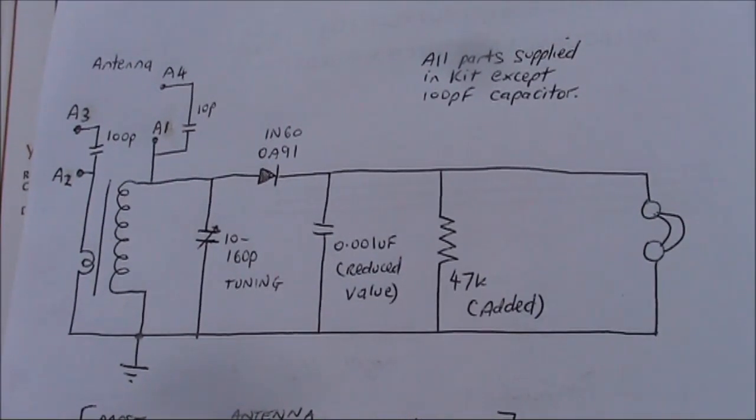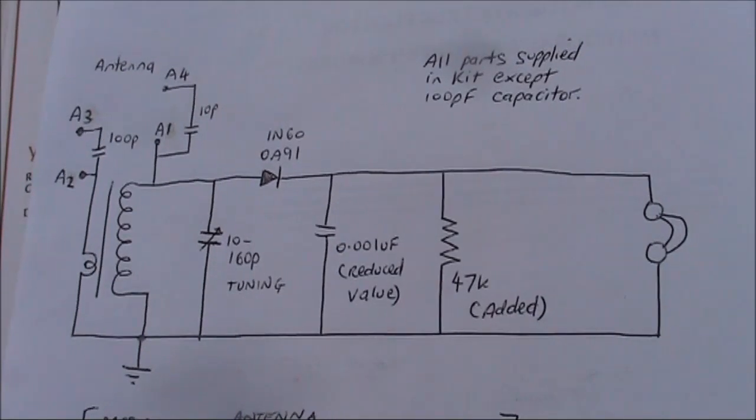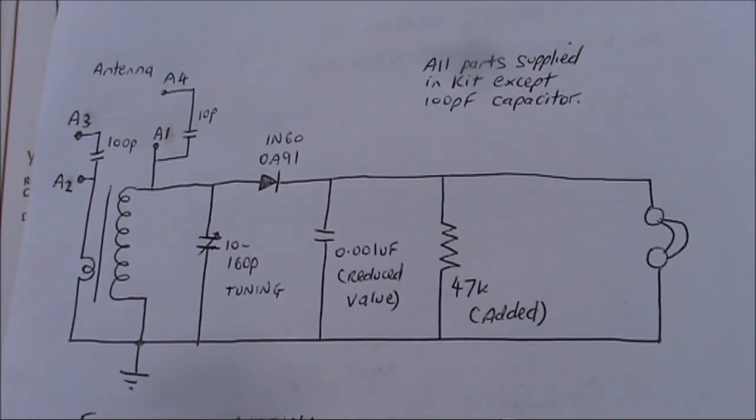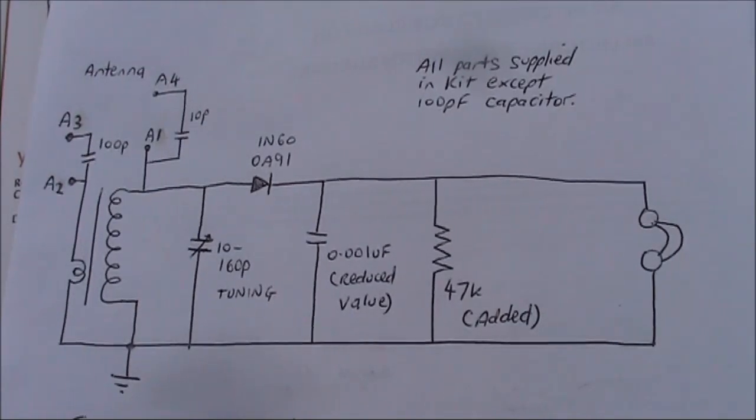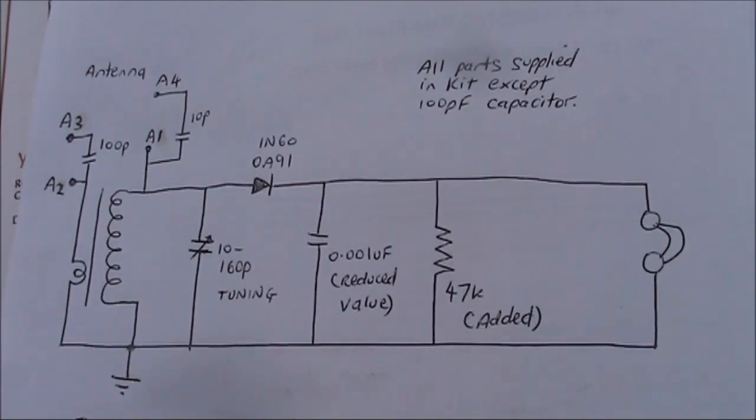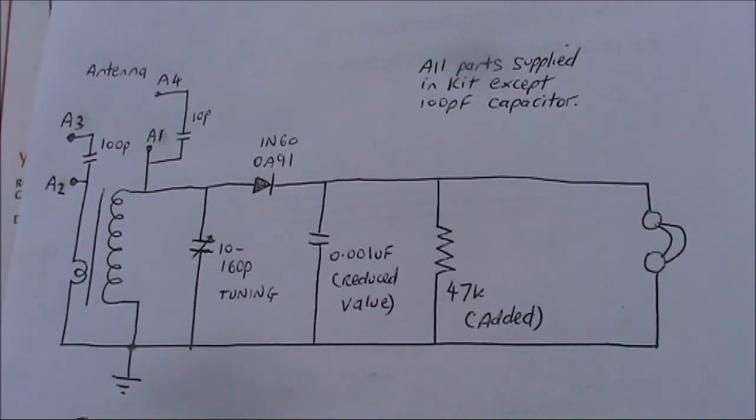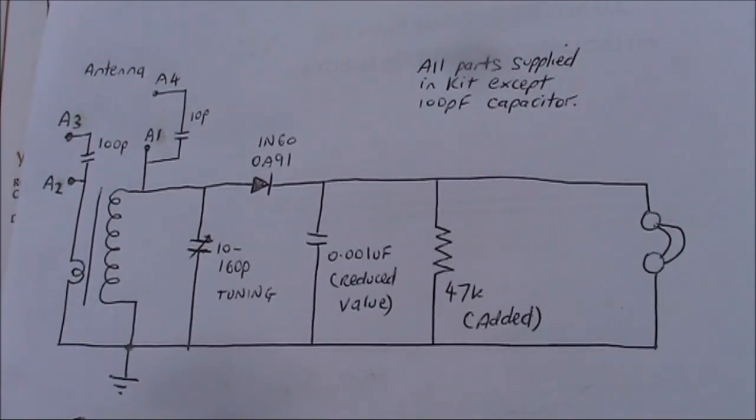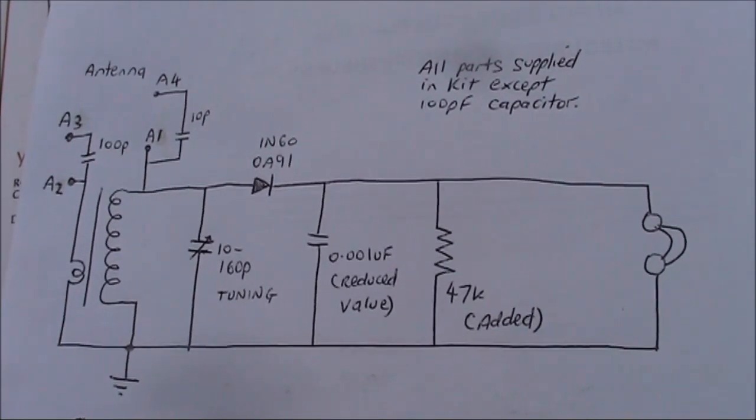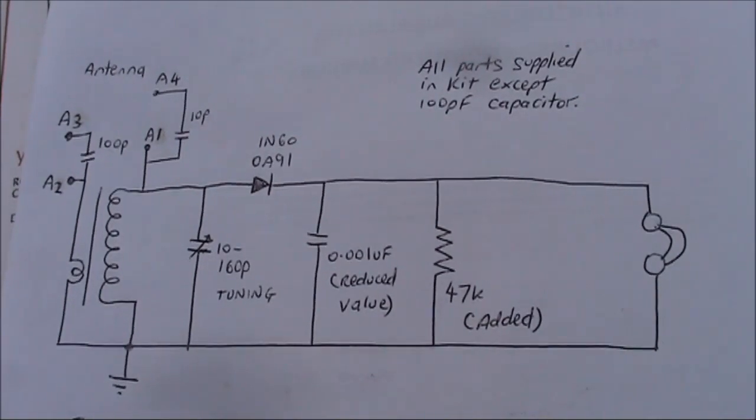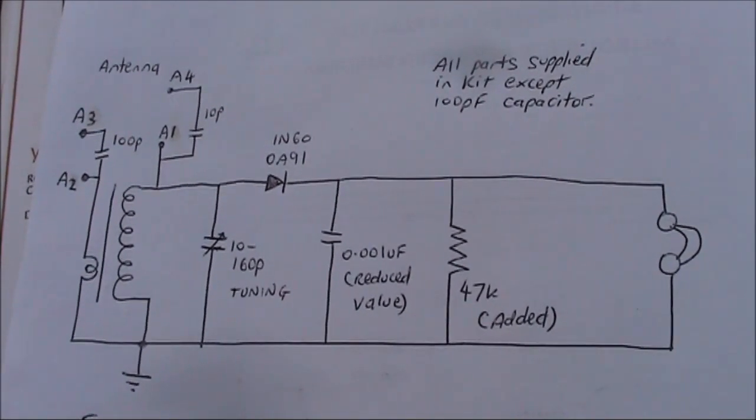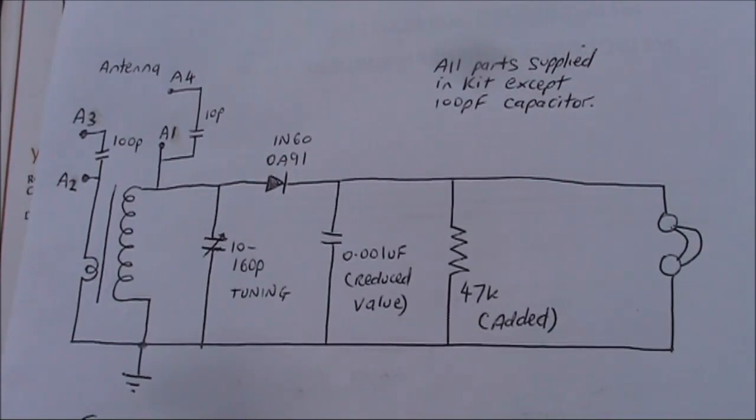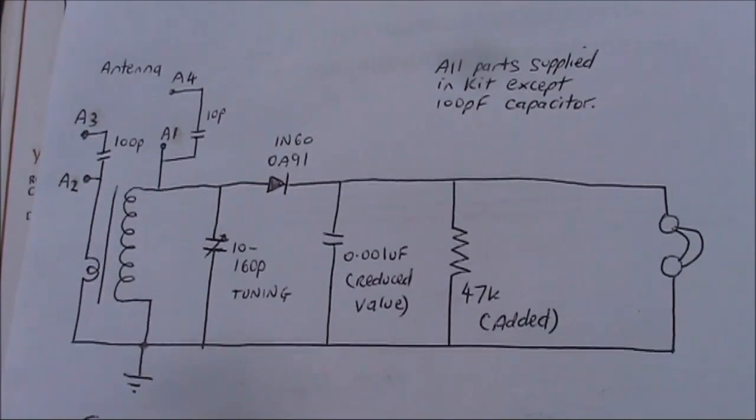If you're building an improved version of the Funway 1 crystal set, this is what I would do. All parts except the 100 picofarad capacitor are supplied in the kit. Most notable improvements include the 47K resistor, which was actually needed to properly hear stations with the crystal earpiece that I had. I'd also reduce the 0.01 capacitor down to 0.001 to increase the volume, or even leave it out. And also I'd have more choices as regards to antenna connections. That will give you better sensitivity or selectivity, and you might need a different selection depending on which station you wanted to pick up.